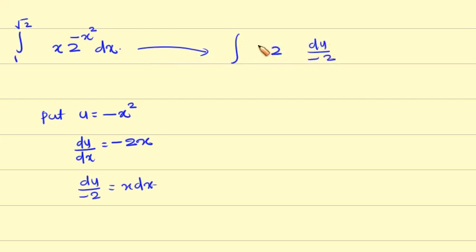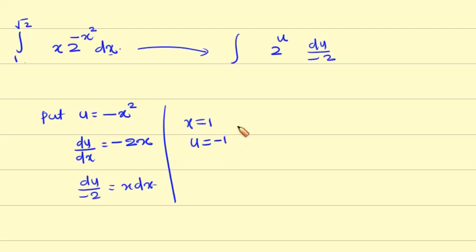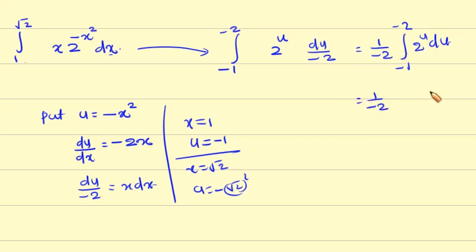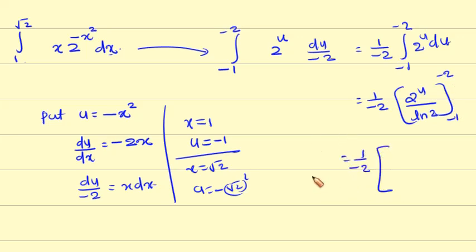When x equals 1, u equals minus 1 square, that is minus 1. When x equals root 2, u equals minus root 2 square, that is minus 2. The integral becomes the integral of 2 raise to u du by minus 2, which equals 1 by minus 2 into 2 raise to u by ln 2, with limits minus 1 to minus 2.